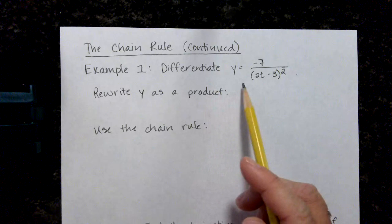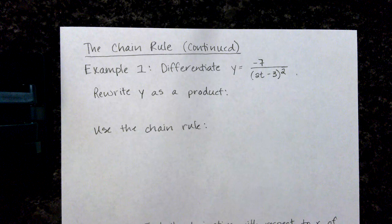In our first example we are asked to differentiate y equals negative 7 over the quantity 2t minus 3 squared.